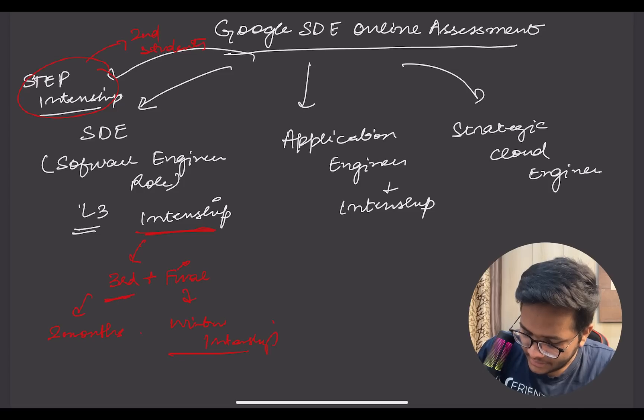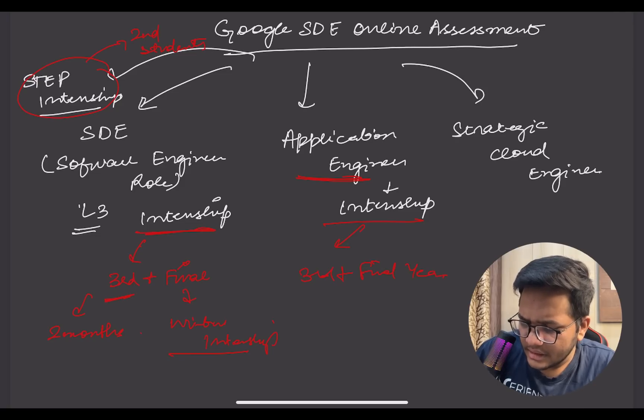Application engineer is both a full-time role as well as internship for third year and final year. Strategic cloud engineer generally they hire for full-time role.